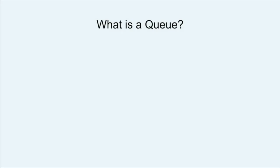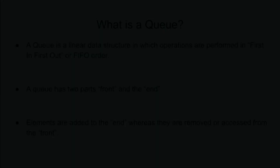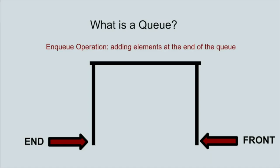Now we'll see what a queue is and how it is implemented in C. A queue is a data structure which follows the first in, first out order. A queue has two parts: the front and the end. The front is where elements are removed from the queue, whereas the end is where elements are added to the queue.